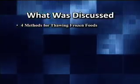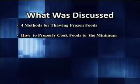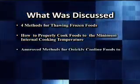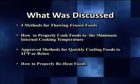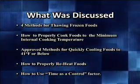Taking an active role in your establishment is critical to the prevention of foodborne illnesses. By using the techniques in this food safety video, you can prevent, reduce, and possibly eliminate the risk factors associated with time and temperature control — this is everyone's responsibility. What was discussed: four methods for thawing frozen foods; how to properly cook foods to the minimum internal cooking temperature; approved methods for quickly cooling foods to 41 degrees or below; how to properly reheat foods; and how to use time as a control factor.